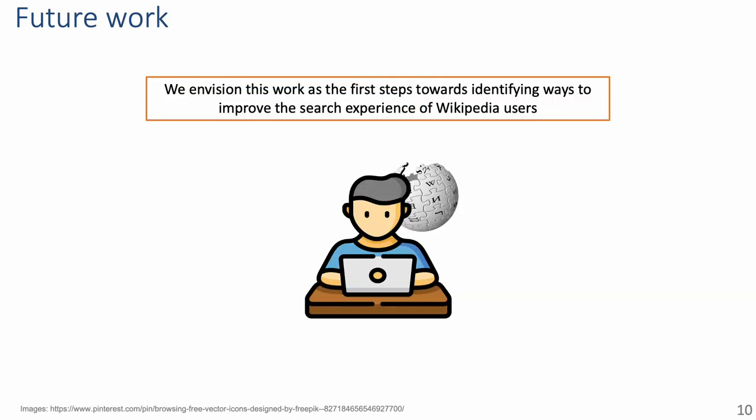To conclude, we envision this work as the first steps towards identifying ways to improve the search experience of Wikipedia users. Future work includes providing insights into what produces the observed behavior, as well as including additional elements into our analysis, like the semantics of the queries, to obtain further insights. The first point can be addressed by segmenting users, for example by languages, and assessing if the average search behavior differs among them. Orthogonally, given the generally transient nature of the search behavior we have observed in this work, we would also like to explore measures that encourage longer page stays in the articles, or alternatively ones that assure the essential information is located at the top of the pages, so that it is not missed by readers.